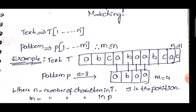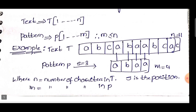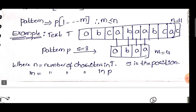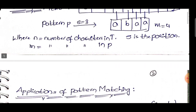The condition is that m must be less than or equal to n. For example, the text string is A B C A B A A B C A C, so the size of the text string is n equal to 11. The pattern is A B A A, so the size of the pattern string m equals 4. Here n is the number of characters in T and m is the number of characters in P. The position is denoted by s; in this example s equals 3, meaning the match is found at the third location.